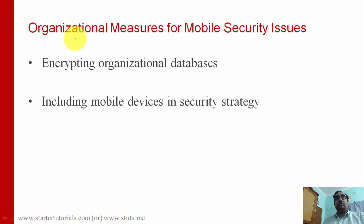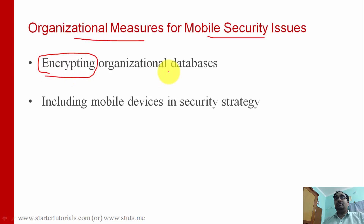Now we are going to look at the various organizational measures for securing mobiles. One measure is encrypting organizational databases. Not only organizational databases, but whatever data is being referred to or accessed from any mobile or handheld devices — all that data should be encrypted before being stored on the device. Otherwise, if the device is lost or stolen, the person who gets hold of it can see all the data if it is in plain text and not encrypted.